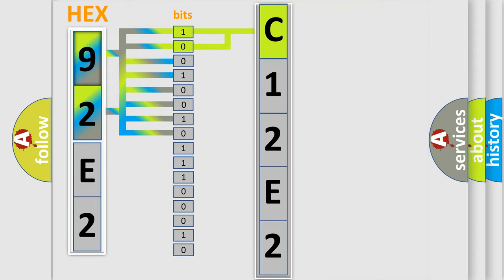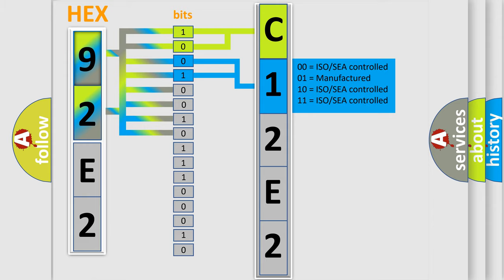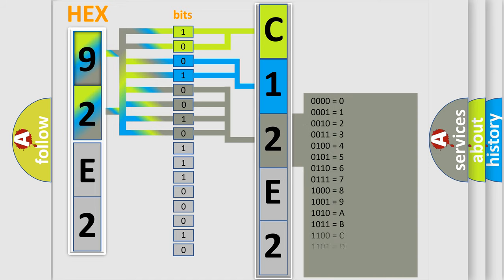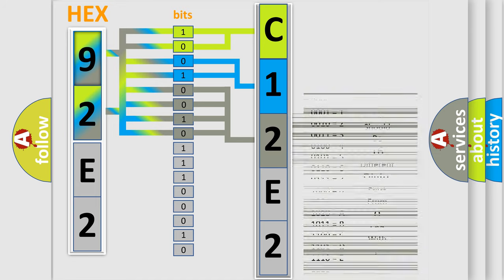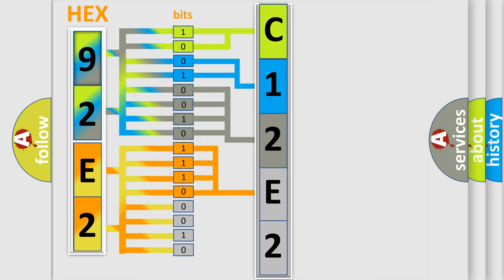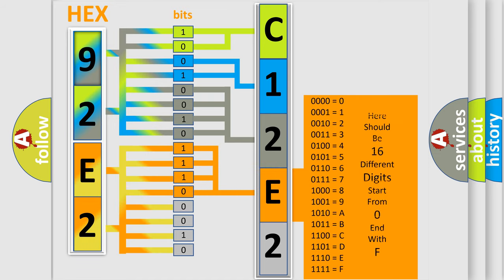The next two bits again determine the second character. The last bits of the first byte define the third character of the code. The second byte is composed of a combination of eight bits. The first four bits determine the fourth character of the code, and the combination of the last four bits defines the fifth character.